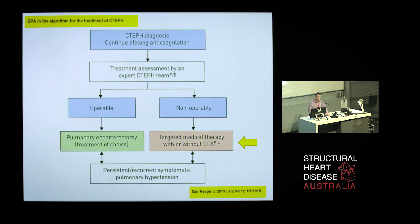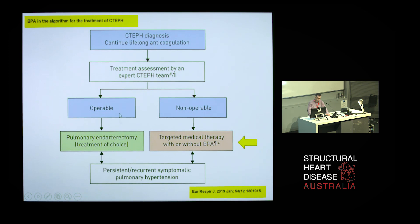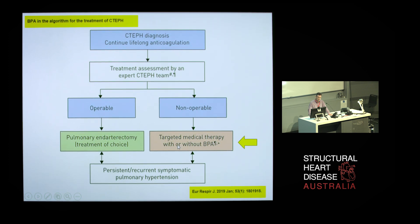Where does BPA sit in the current algorithm for the treatment of chronic thromboembolic pulmonary hypertension? At this stage, pulmonary endarterectomy is the gold standard, and most patients deemed to have operable disease should probably have this operation. For those patients who don't have operable disease, they're usually triaged to medical therapy — and in this day and age, probably with or without balloon pulmonary angioplasty, depending on centres who have BPA experience.